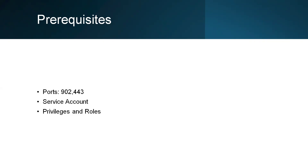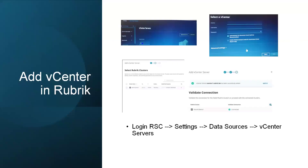Then vCenter is ready to add in Rubrik. To add vCenter in Rubrik, first we have to navigate or log in to RSC, then go to Settings > Data Sources > vCenter Servers. Once we navigate here, we will see the option to Add vCenter. Select Add vCenter — we have to enter the vCenter name, username (the service account address from domain.com), and password.